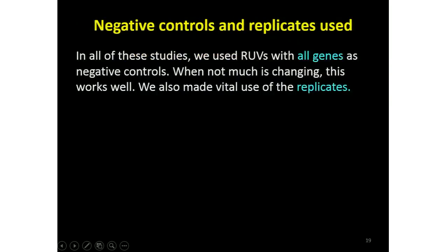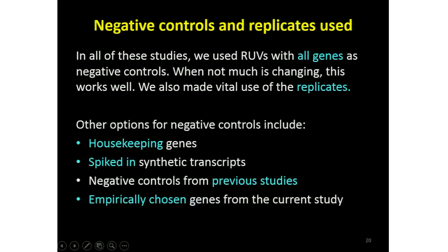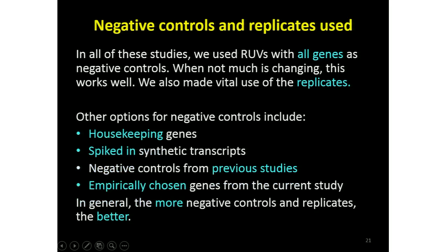That analysis needed some negative controls, and in all of those studies we just used everything as negative controls. The method is somewhat robust to the definition of negative control, and we also made vital use of the replication. Other options for negative controls include housekeeping genes, spiked-in transcripts, negative controls from previous studies — which are obviously the perfect ones — and of course you can find them empirically. More is definitely better.